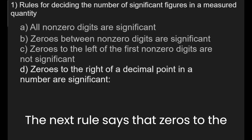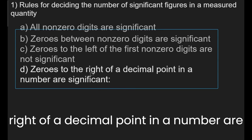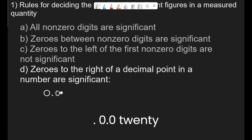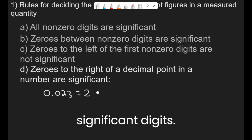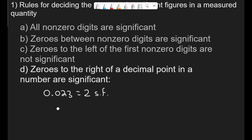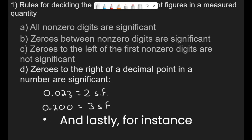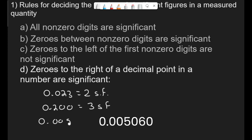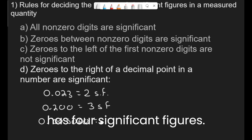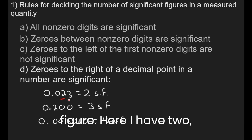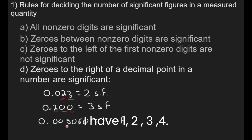The next rule says that zeros to the right of a decimal point in a number are significant. 0.023 has only two significant digits. Another example: 0.200 has three significant figures. And lastly, 0.005060 has four significant figures. I'm going to underline each significant figure: here I have two, here I have three, and here I have four.